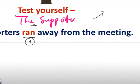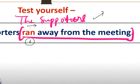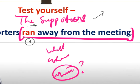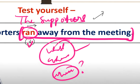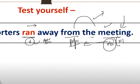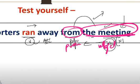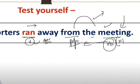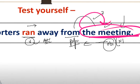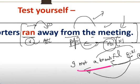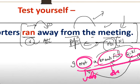Like 'the supporters ran away from the meeting' - the supporters ran what? Ran whom? Ran where? The answer is 'away from the meeting', so the answer to 'what' and 'whom' is not coming from the verb - it is not the object of the verb. Now after the preposition 'from', the word 'meeting' is the object of the preposition. After a preposition, the noun that follows is the object of the preposition. 'I met a beautiful girl' - I met whom? A girl. 'Beautiful' is an adjective in the object; 'girl' is the object of the verb.